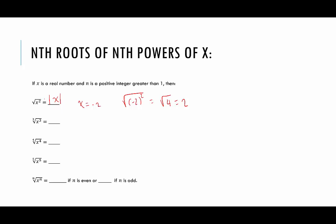So now the cubed root of x cubed. You might be thinking, I got this, it's the absolute value of x. And that's not true. Because if x is negative 2, and we have the cubed root of negative 2 cubed, the cubed root of negative 8 would actually be negative 2. So in this case, assuming that x is a real number, the cubed root of x cubed would in fact be x.